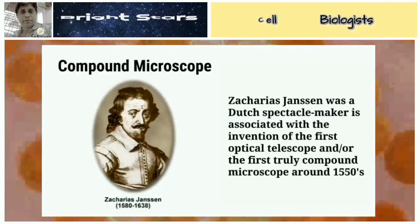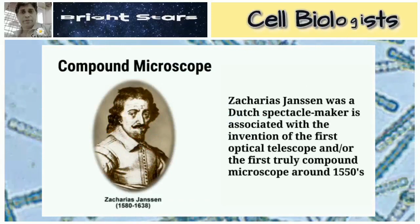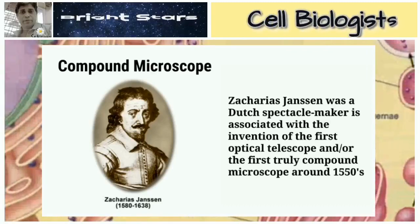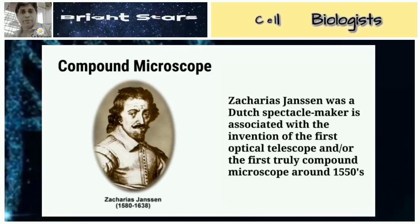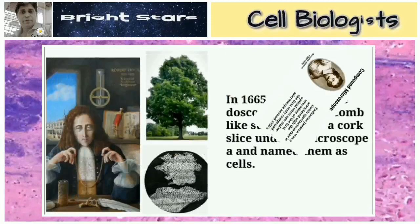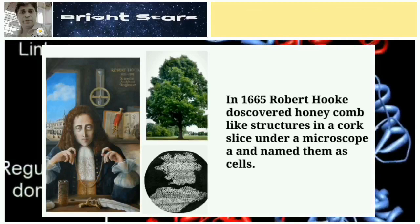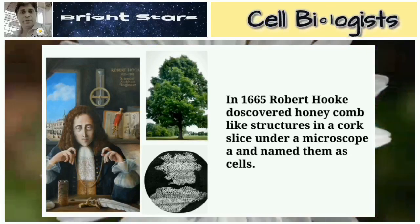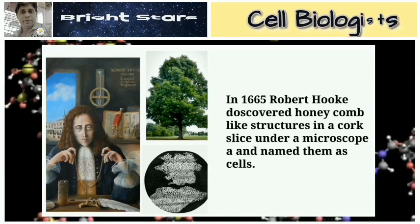Zacharias Janssen was a Dutch spectacle maker who is associated with the invention of the first optical telescope and the first truly compound microscope, invented around the 1550s. In 1665, Robert Hooke discovered honeycomb-like structures in a cork slice under a microscope and named them as cells. The cork used belonged to an oak tree.